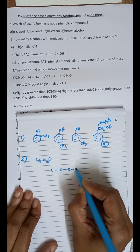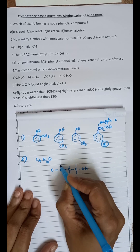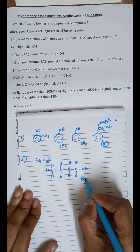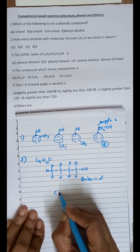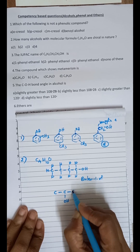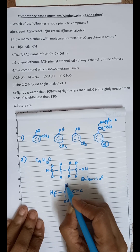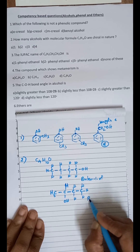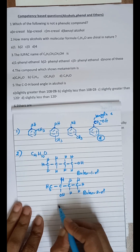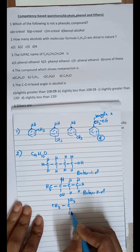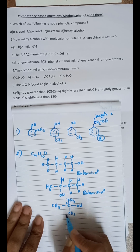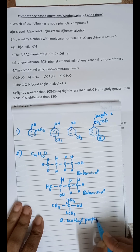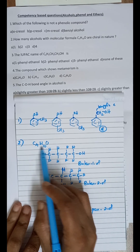The first possible structure is butan-1-ol. The second isomer has the OH group connected to the second carbon, giving butan-2-ol. The third isomer is tertiary butyl alcohol, also called 2-methylpropan-2-ol. These are the three possible structures for this molecular formula.